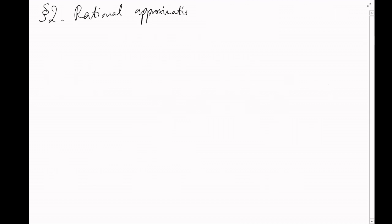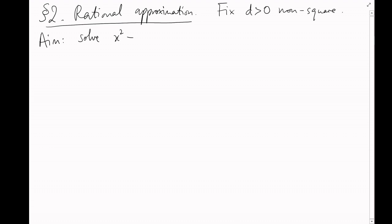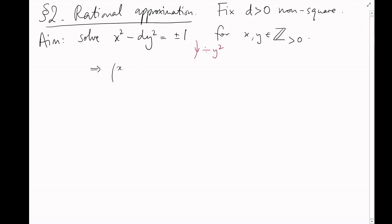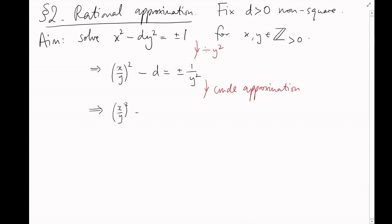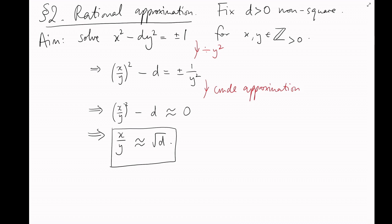Section 2: Rational approximation. Fix some positive non-square value of d. We aim to solve x² − dy² = ±1 for positive integers x and y. Dividing by y², we get (x/y)² − d = ±1/y². Since y is an integer, the right-hand side is very close to zero, meaning x/y is approximately √d. So in looking for units, we're looking for rational numbers x/y that are good approximations to √d.